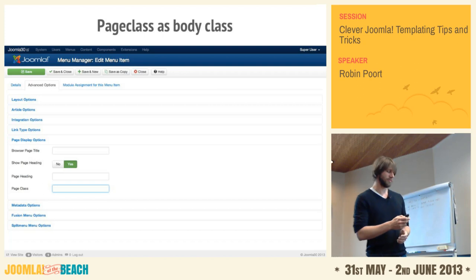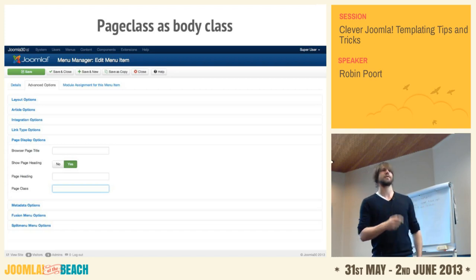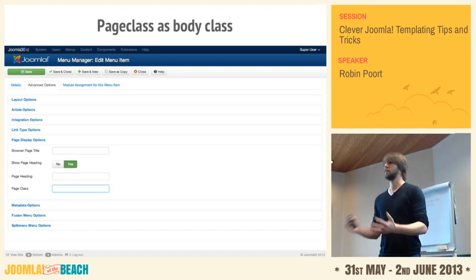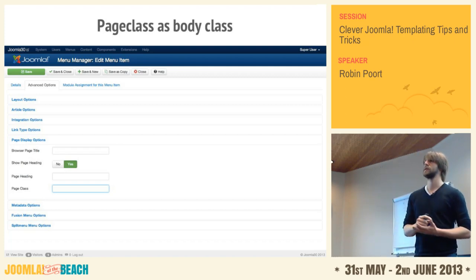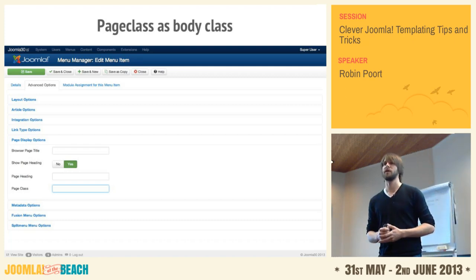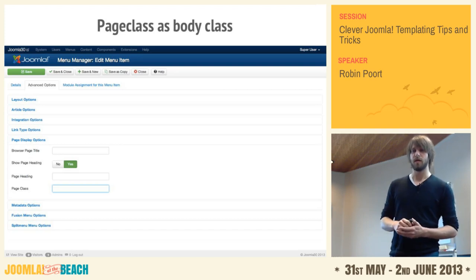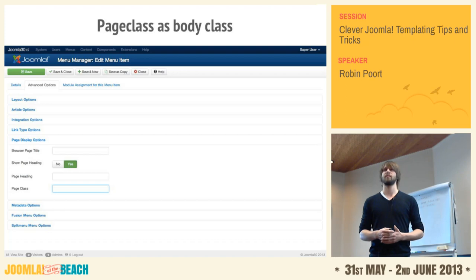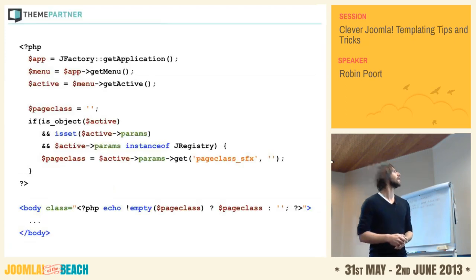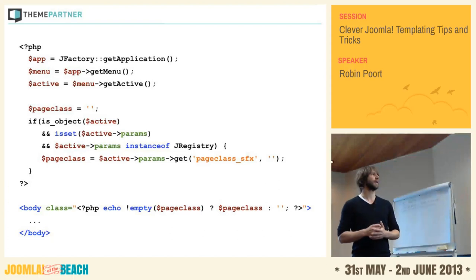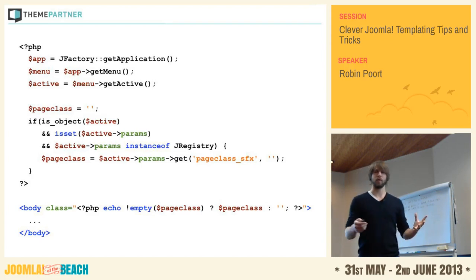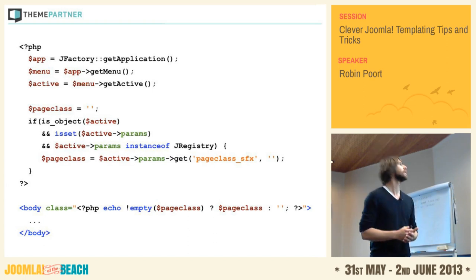So how do we implement it? It looks really easy: you fill in your page class, click save, go to your website, and your page class is being loaded. The only downside is that Joomla only loads it in components and modules, so that's not deep enough in the code to have more control. We want to put it on the body element. We need a little PHP to get the active menu and the actual page class, and then we can add it to the body element.